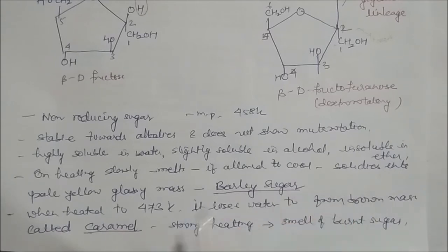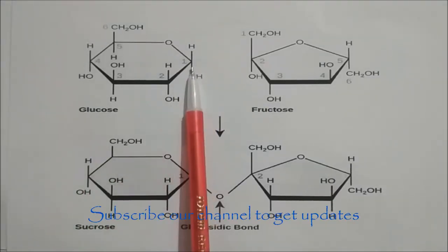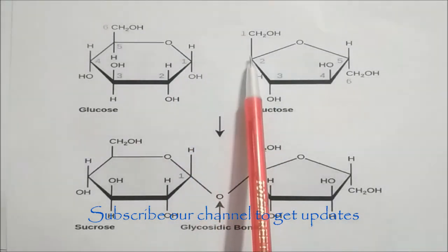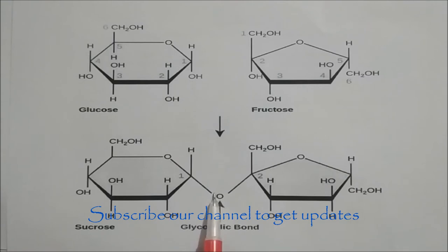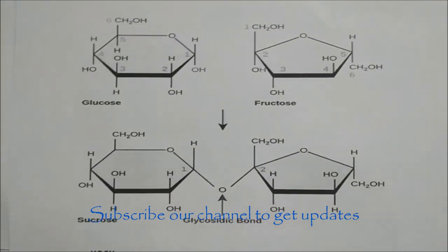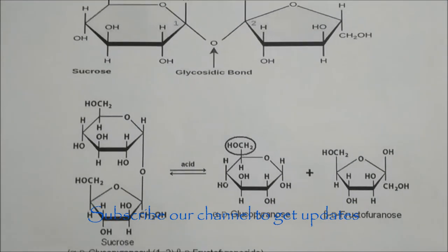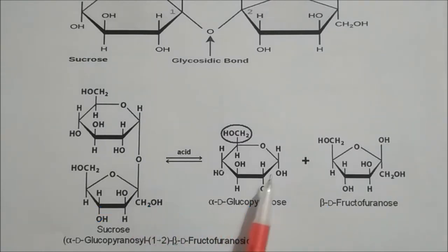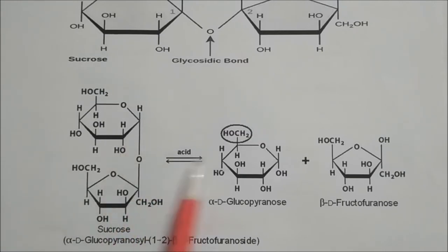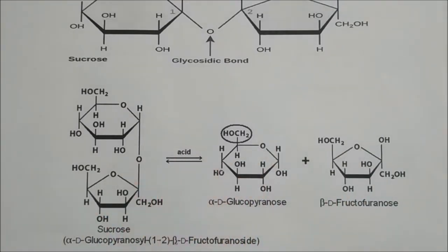In the structural diagram, the glucose anomeric carbon (hemiacetal) and fructose carbon-2 (hemiacetal) condense to form the glycosidic bond, giving an acetal — hence sucrose is non-reducing. On hydrolysis, sucrose gives alpha-D-glucopyranose and beta-D-fructofuranose. Water adds to both sides in this reversible reaction, yielding these two monosaccharides. The linkage is alpha-1,2-glycosidic bond.